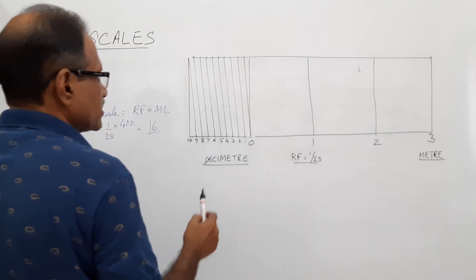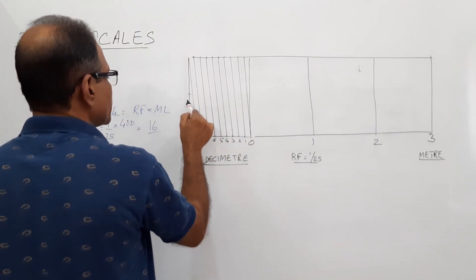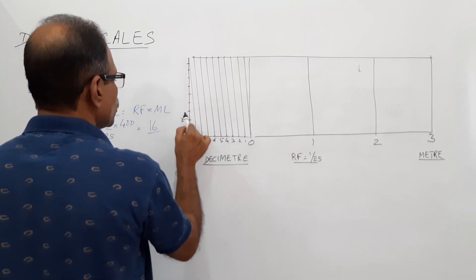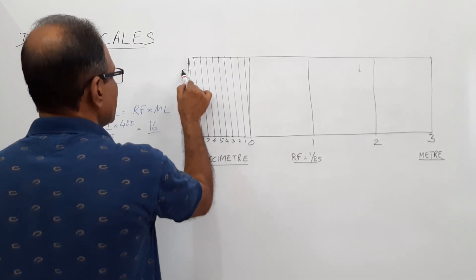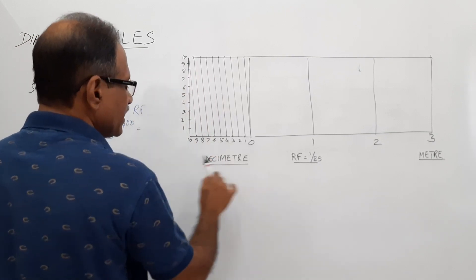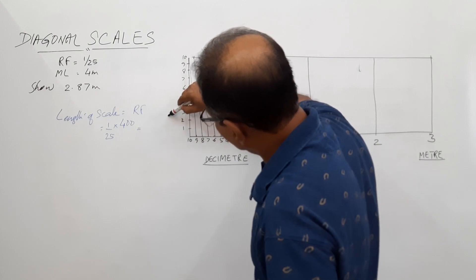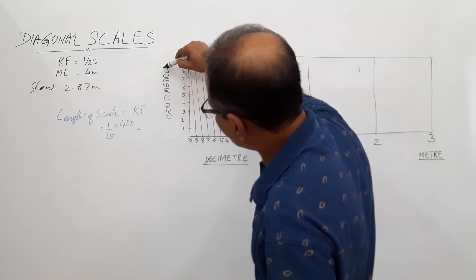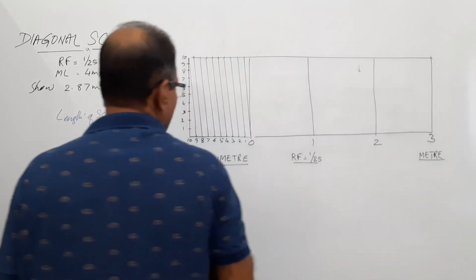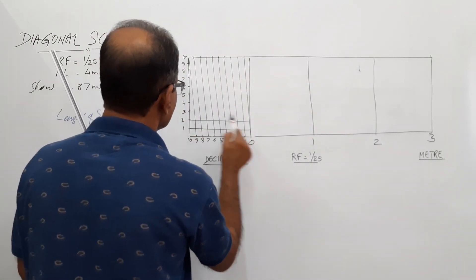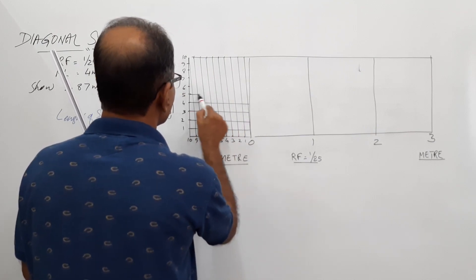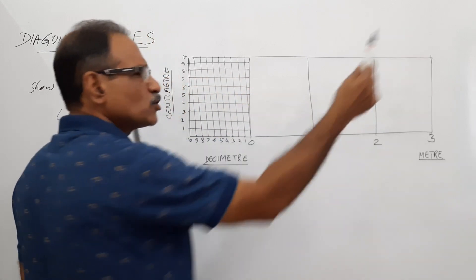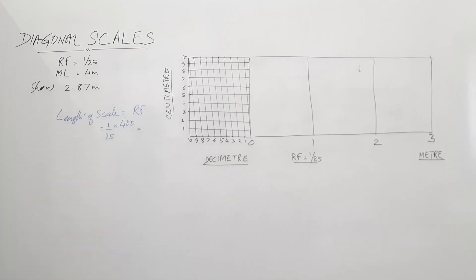Now divide this height also into 10 equal parts and write 1, 2, 3, 4, 5, 6, 7, 8, 9, 10. This unit is decimeter and the next subdivision is centimeter — 10 centimeters constitute 1 decimeter. Draw horizontal lines through these points; I prefer them to be extended only within this area.